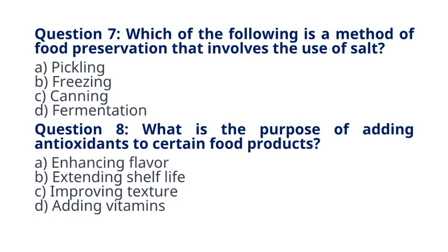Question 8. What is the purpose of adding antioxidants to certain food products? A. Enhancing Flavor B. Extending Shelf Life C. Improving Texture D. Adding Vitamins. The correct answer to question 8 is option B. Extending Shelf Life. Explanation: antioxidants are added to food products to prevent the oxidation of fats and oils, thereby extending their shelf life.